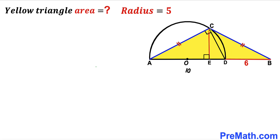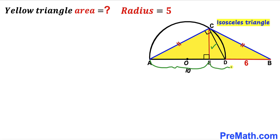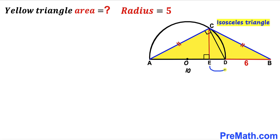Next, I've dropped perpendicular EC. Since triangle ABC is isosceles, this perpendicular EC is also the median, meaning length AE equals length EB. We know the whole length AB is 16 units, so segment EB is half of that — 8 units. Therefore, tiny segment ED equals 8 minus 6, which gives us 2 units. I'll label perpendicular EC as height h.